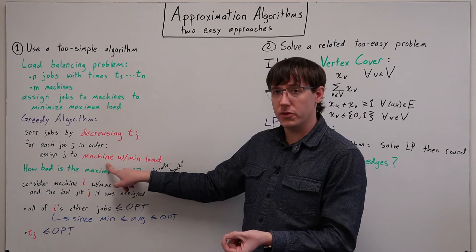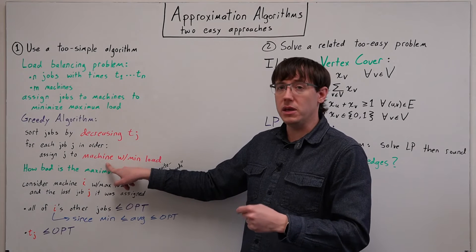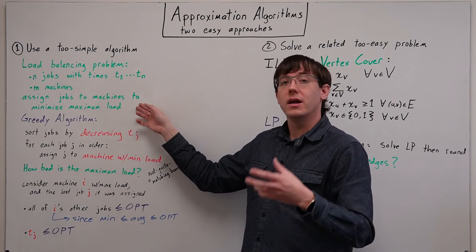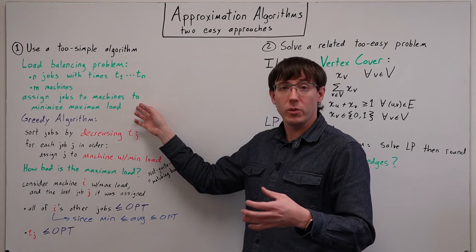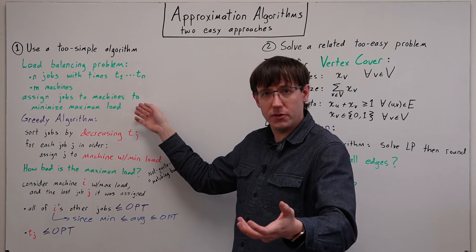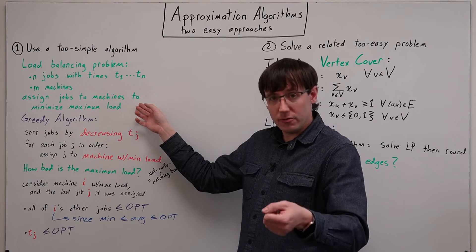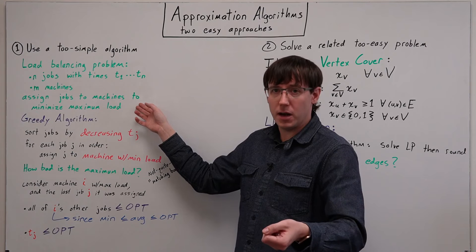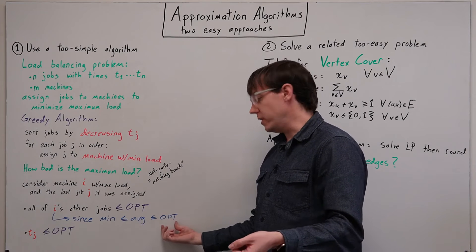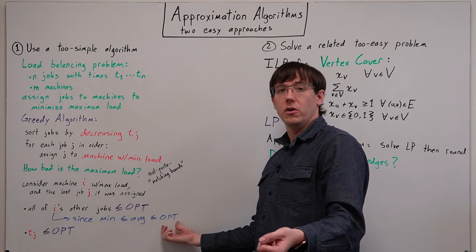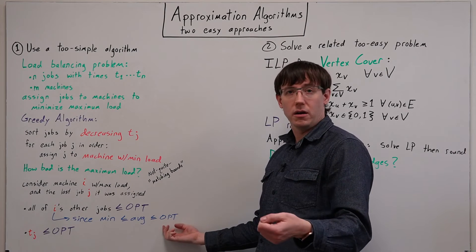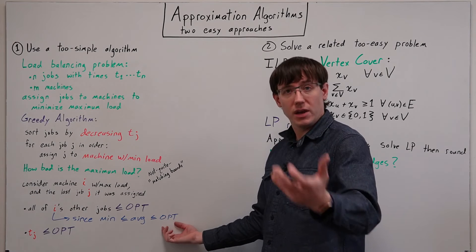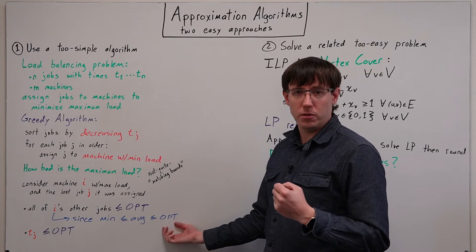So the average load when we haven't yet assigned all of the jobs must be less than or equal to the average load later when we have assigned all of the jobs. And the average load when we've assigned all of the jobs must be less than or equal to the worst load when we've assigned all of the jobs, which is the cost of the optimal solution.